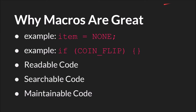For example, here we have item equals none. None is a macro that I use in most of my projects — it's simply negative one. Or here we have if coinFlip, where coinFlip is an expression. Just the idea that we can take a complex expression and turn it into a single word that we can now use in our code.